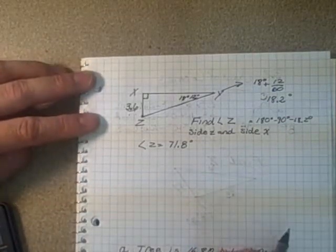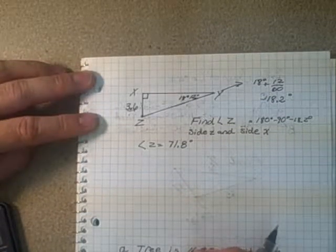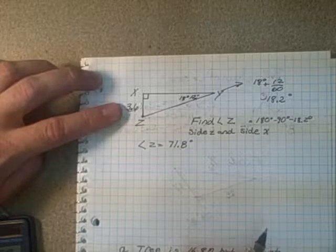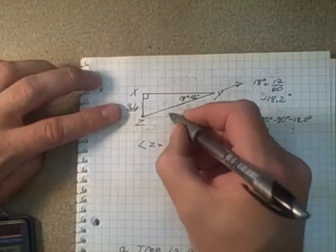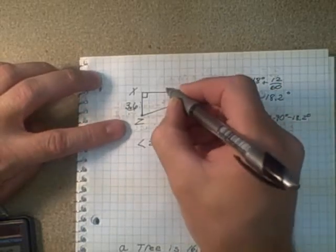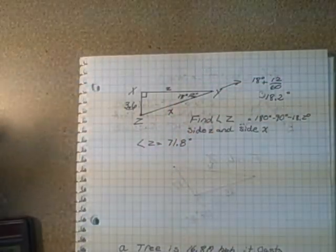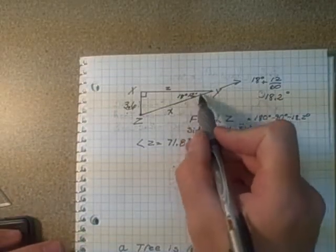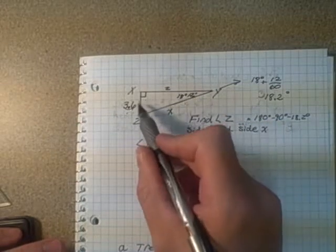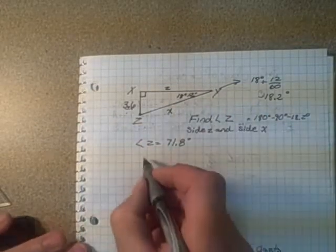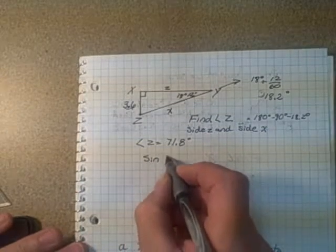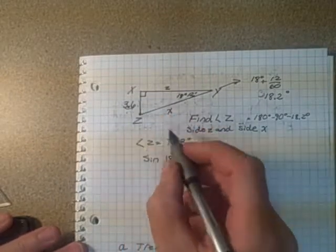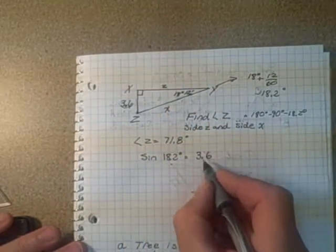Now in order to find the other two sides that we need, we have side Y, but we do not have X, which would be the hypotenuse here, or little Z here, which would be that side. So we have to pick one of them to start with. Let's do the ratio of using angle Y. Let's do sine of angle Y, which is 18.2 degrees. And sine is opposite over hypotenuse, so it would be 3.6 over X.